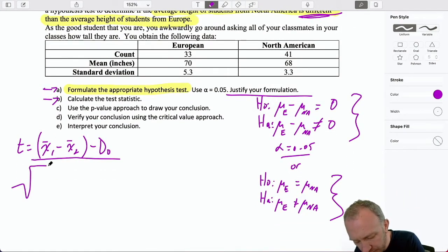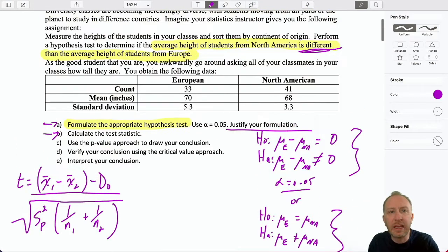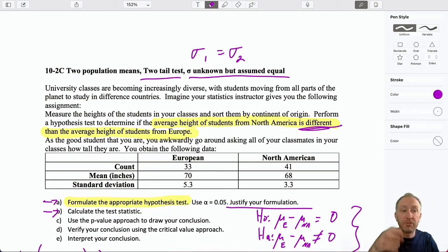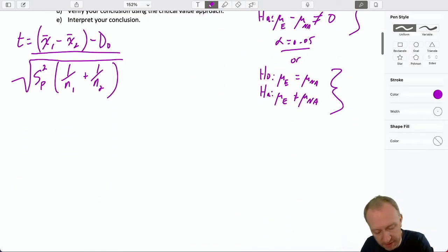Because now what we need is this pooled estimator of that population variance. Because if we're assuming sigma 1 is equal to sigma 2, we're not assuming we know what they are. We're assuming that whatever they are, they're the same. So they're equal to some common but unknown population variance. Well, then, we need an estimate of that unknown population standard deviation or population variance. And so, that's what this pooled estimator is.